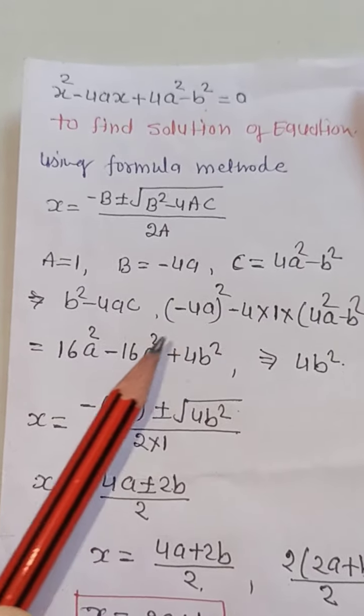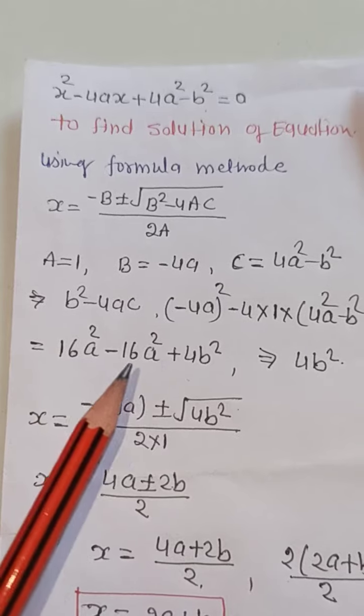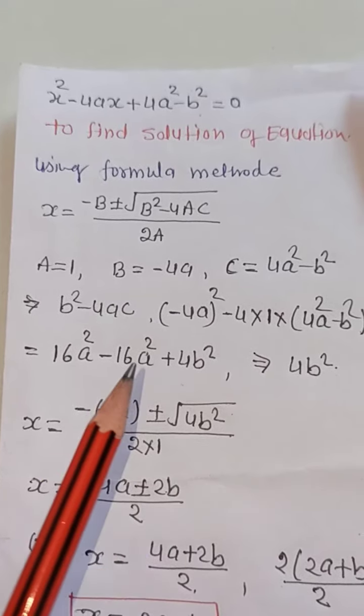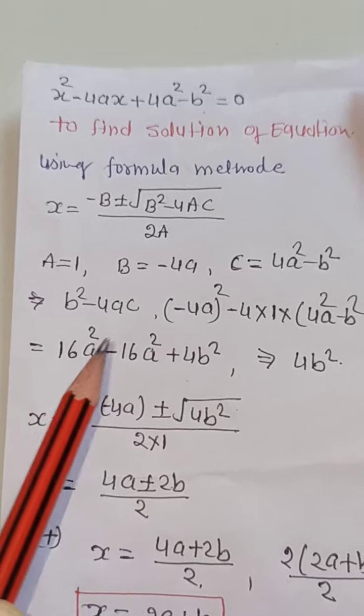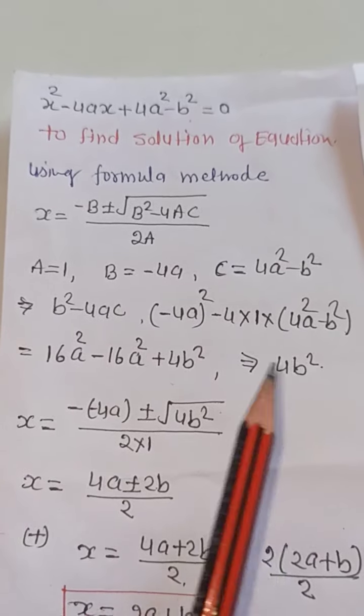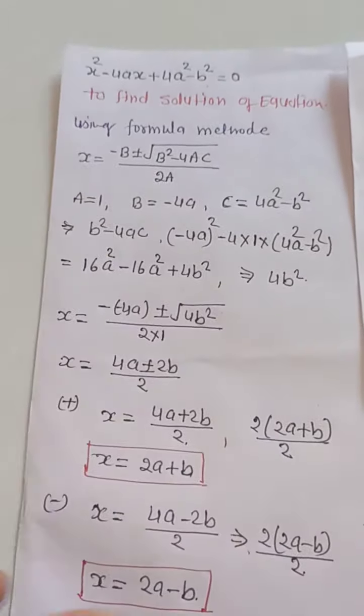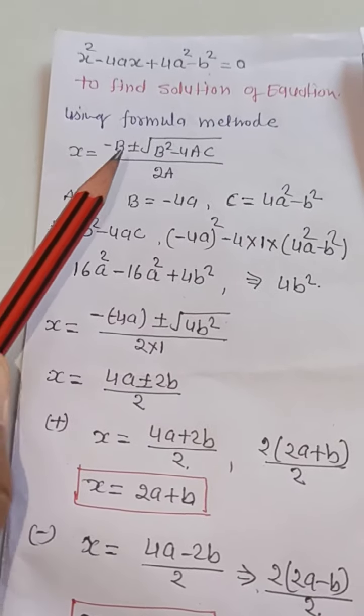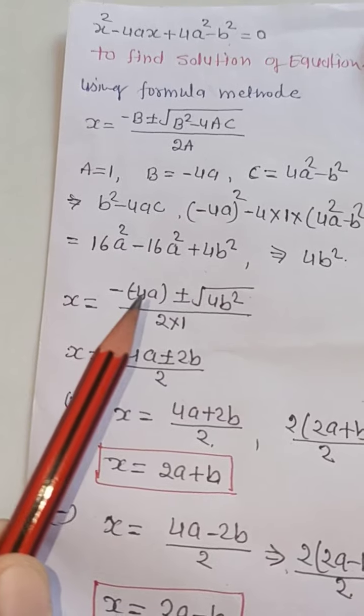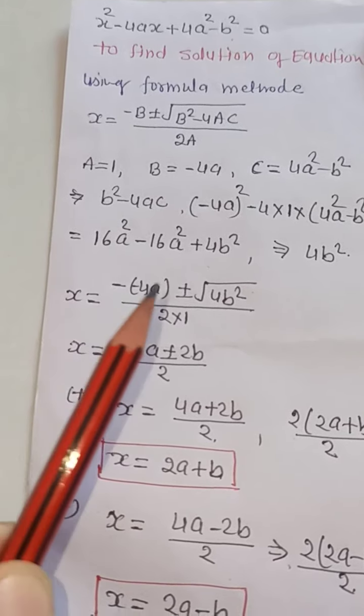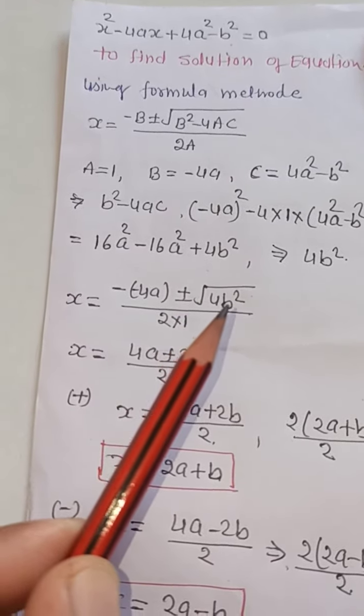We will substitute the value in this formula. In place of b minus 4a, minus minus plus ho jayega. And plus minus root 4b square.